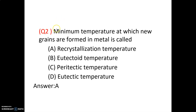Question number 2. The minimum temperature at which new grains are formed in metal is called recrystallization temperature, eutectoid temperature, peritectic temperature, or eutectic temperature. The answer is A — recrystallization temperature. The recrystallization temperature for steel is 723 degrees Celsius. If the metal is worked above this temperature, it is called hot working; if performed below, it is called cold working.